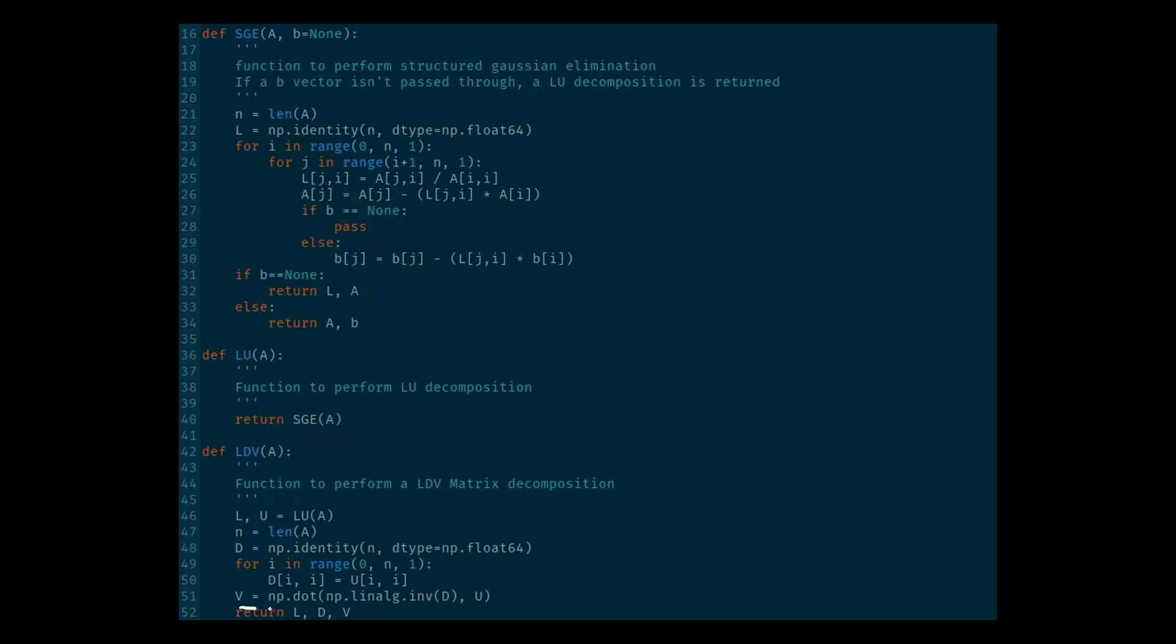And then, last but not least, we're computing the inverse of D right here. I'm cheating a little bit by using the numpy package, but I didn't want to go into a big aside of how to do inversions computationally. So, we're not going to deal with that. We're just going to cheat a little bit and use numpy's lin-alg package to invert that. And then, we are just computing D inverse U to get V. And then, lastly, line 52, we're returning it all.